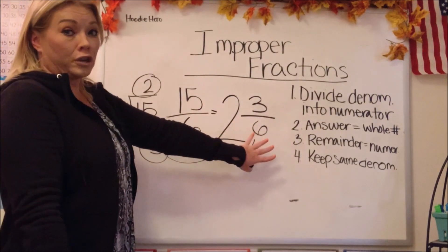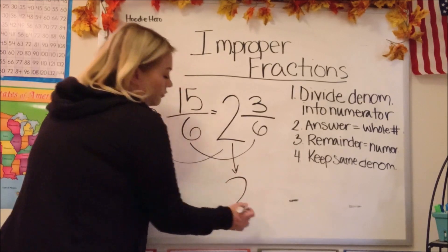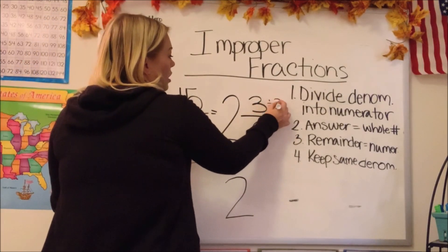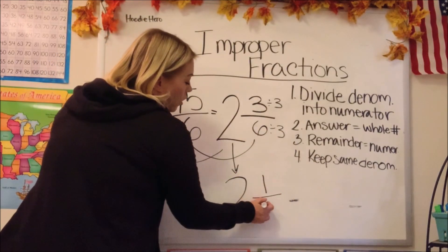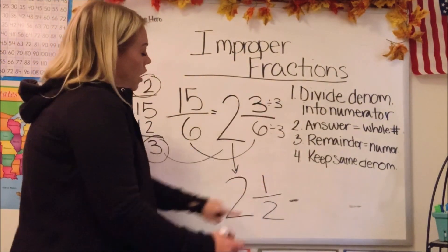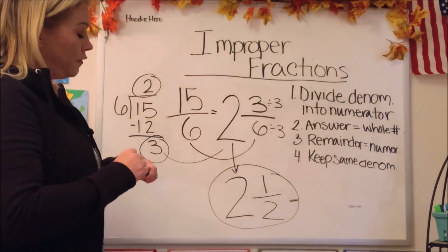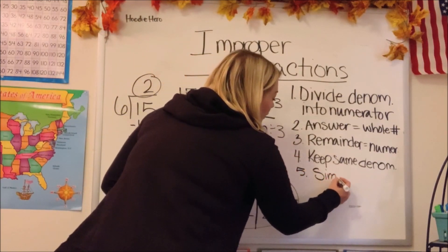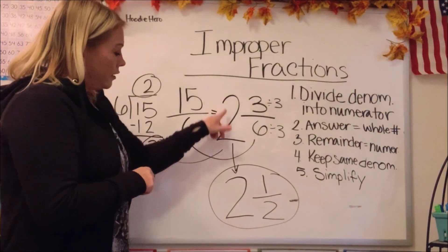This would be your first answer, but what can we do with it? We can't simplify the whole number — that stays as 2. But we could simplify the fraction by 3: 3 divided by 3 is 1, and 6 divided by 3 is 2. That makes our new fraction 1 over 2. So your answer is 2 and 1 half. There are 4 steps, and we should add step 5: simplify if possible — because not every time will you be able to simplify.